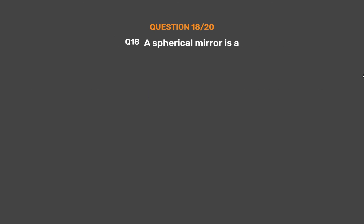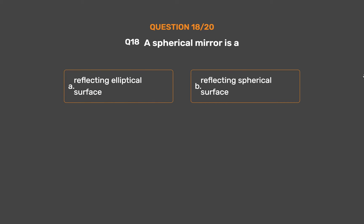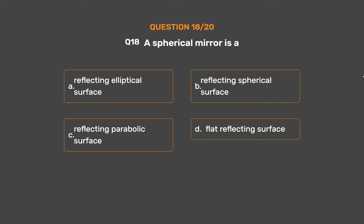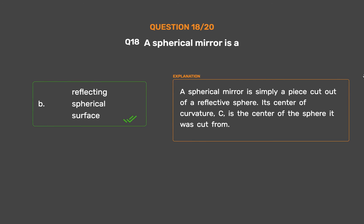Question number 18. A spherical mirror is: option A, reflecting elliptical surface; option B, reflecting spherical surface; option C, reflecting parabolic surface; option D, flat reflecting surface. The correct answer is option B, reflecting spherical surface. A spherical mirror is simply a piece cut out of a reflective sphere. Its center of curvature, C, is the center of the sphere it was cut from.